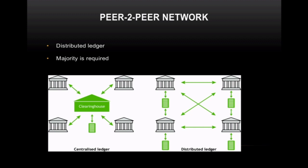With the peer-to-peer network, each node is connected to each other and there is no central server at all. Each node has its own copy of the ledger. In the centralized ledger, if a transaction happens, it gets updated in the centralized ledger and whatever the server says, every node has to accept as the truth.